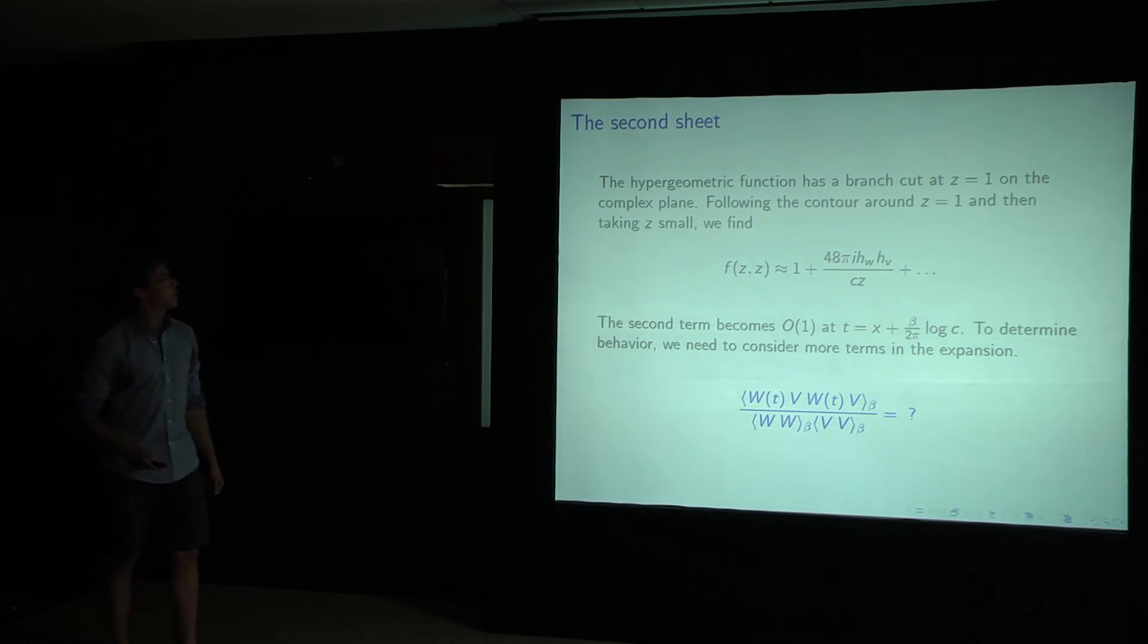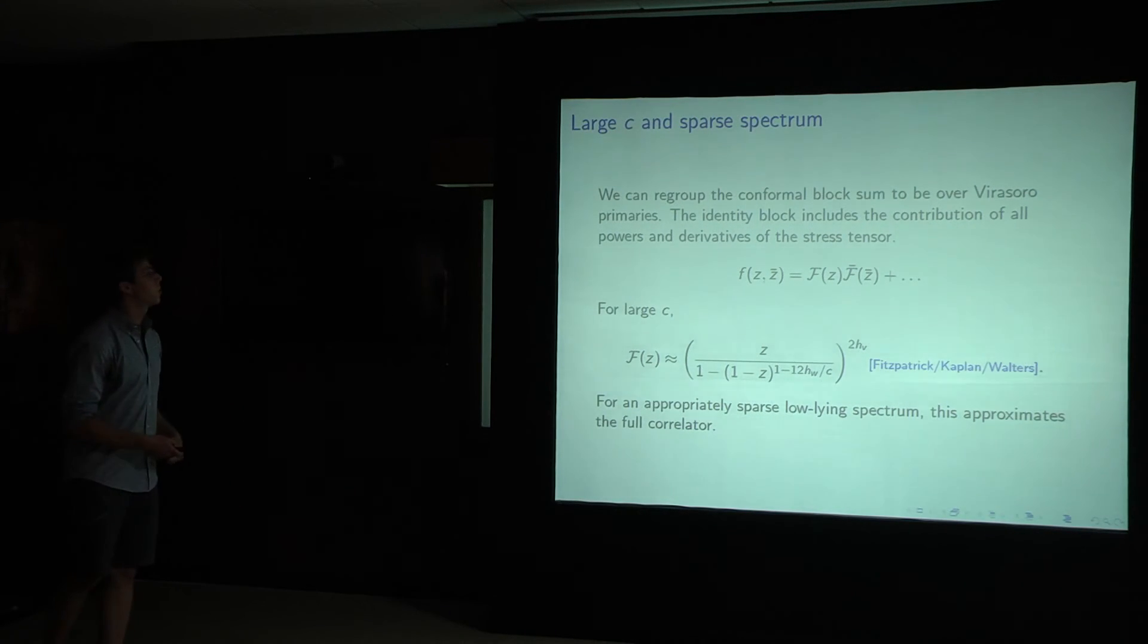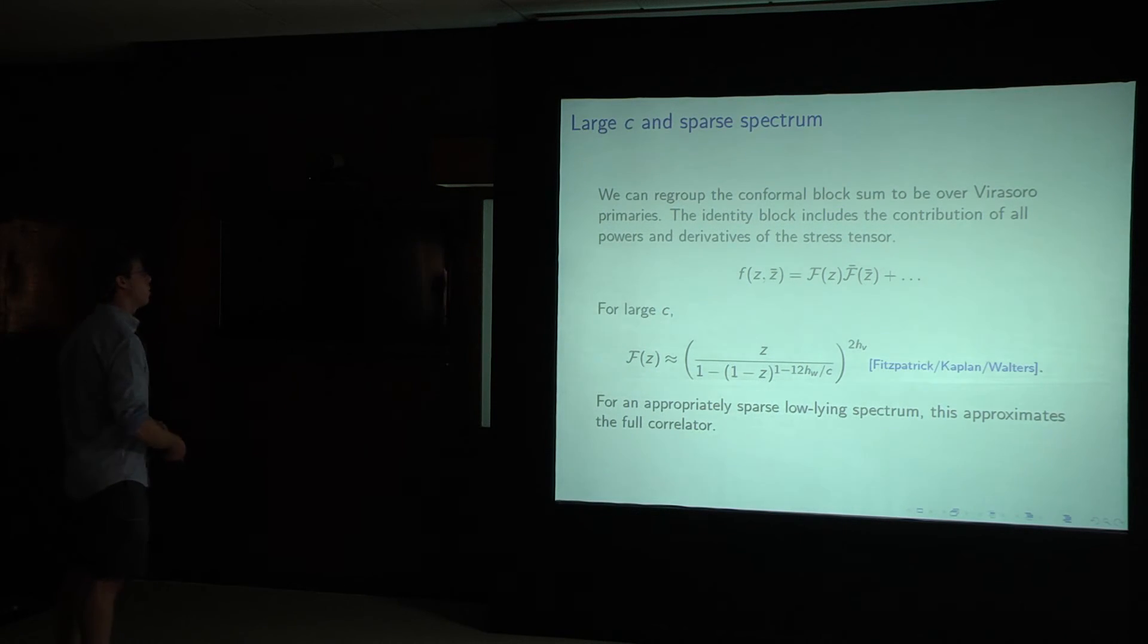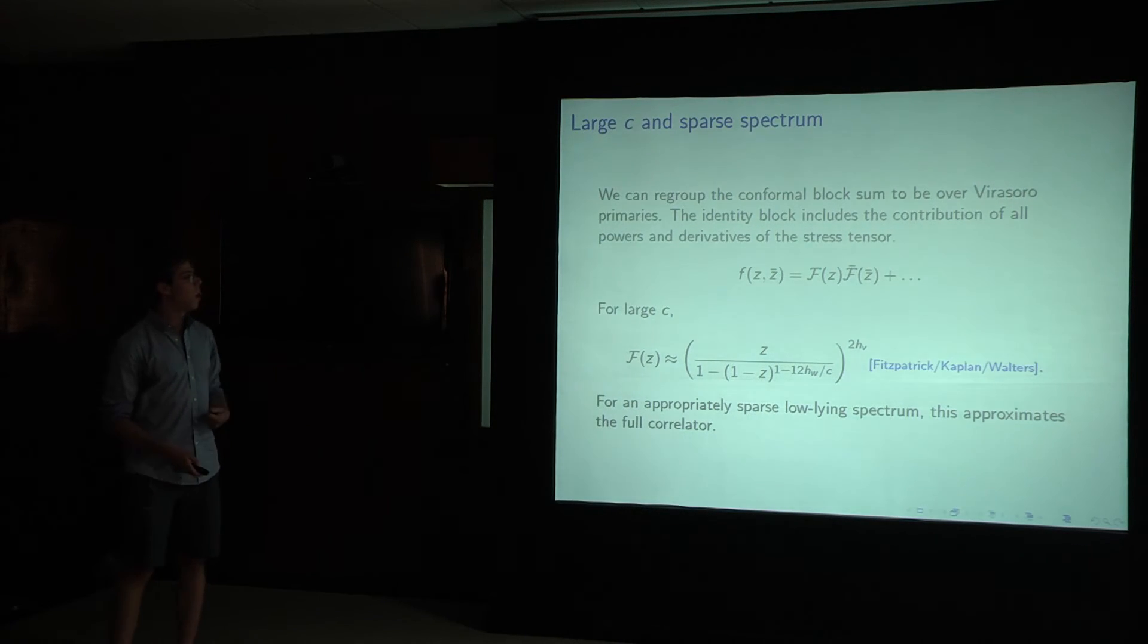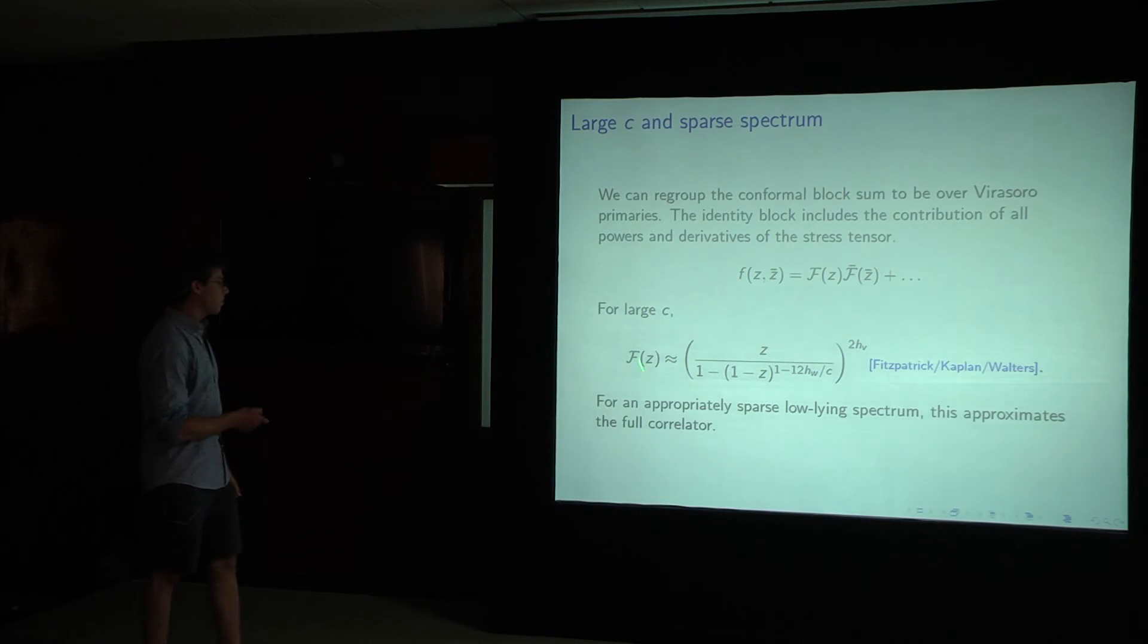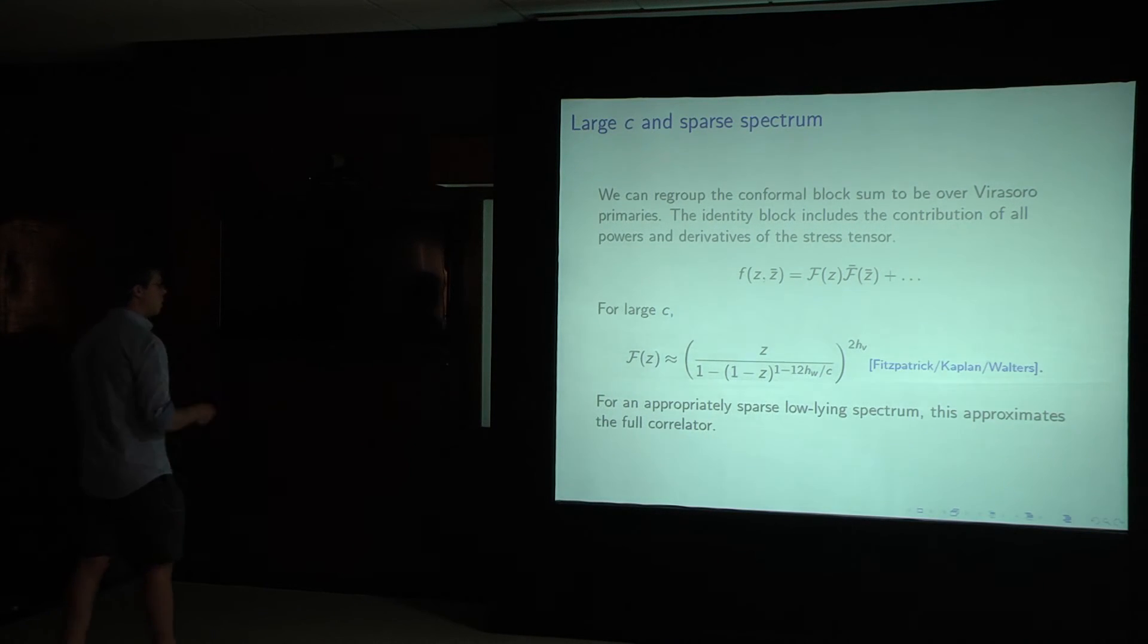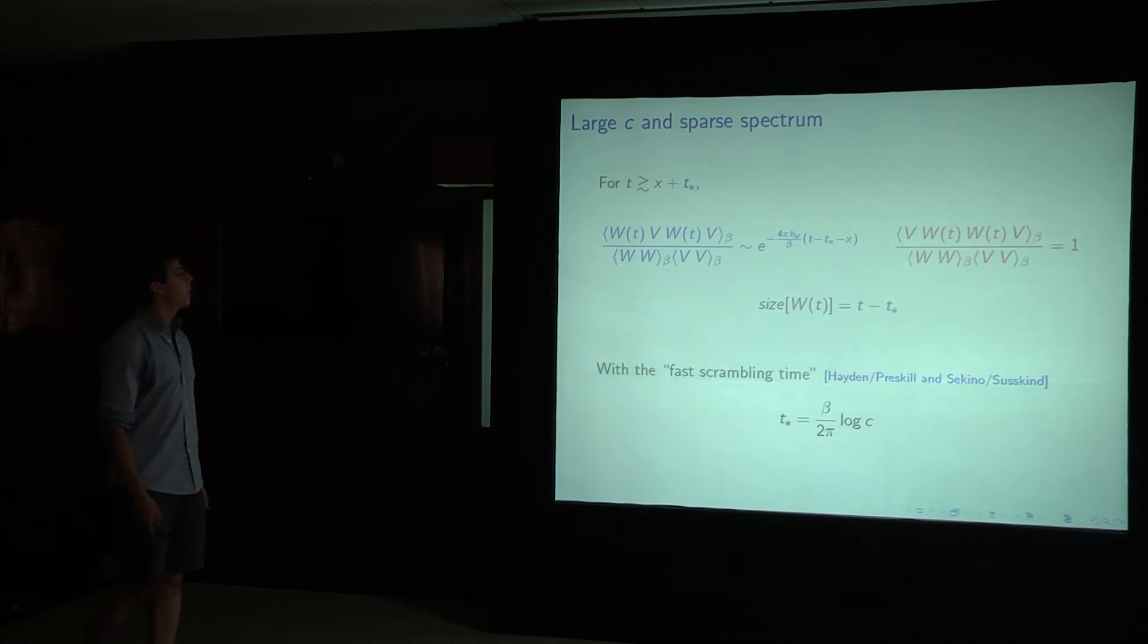So now let's consider some specific examples. So first, I'll start with a large central charge, one plus one dimensional CFT, with a sparse low-lying spectrum. In this case, we can use the Virasoro symmetry to regroup the terms and the sum, and to be over Virasoro primaries. In this case, the identity block includes the contribution of all pairs and derivatives of the stress tensor. And Fitzpatrick, Kaplan, and Walters computed this object for us. So I've just reproduced their formula here. And for an appropriately sparse low-lying spectrum, this and only this approximates the full correlator.